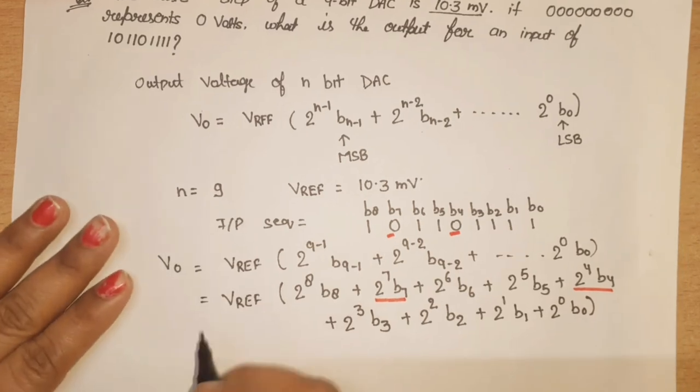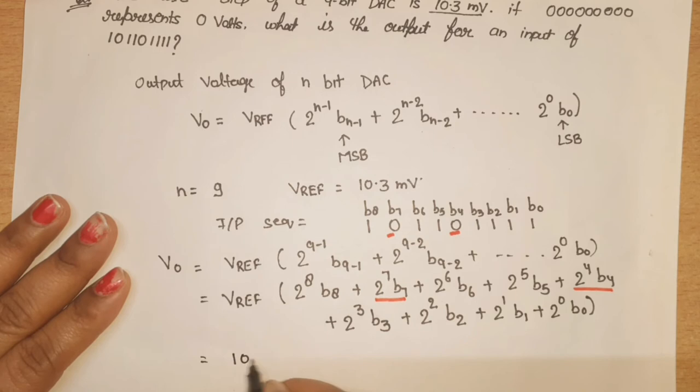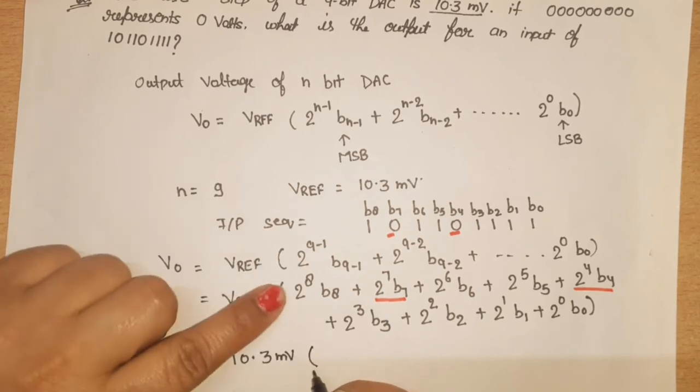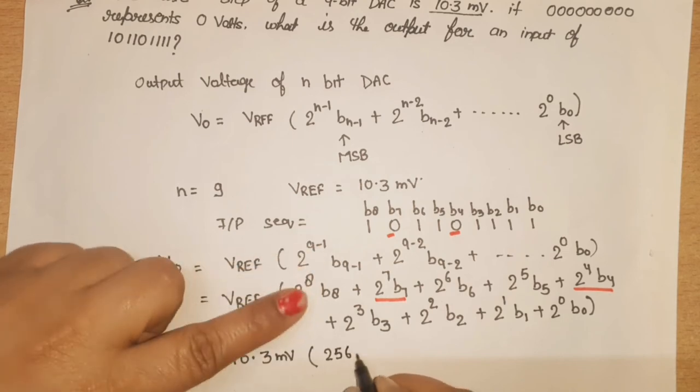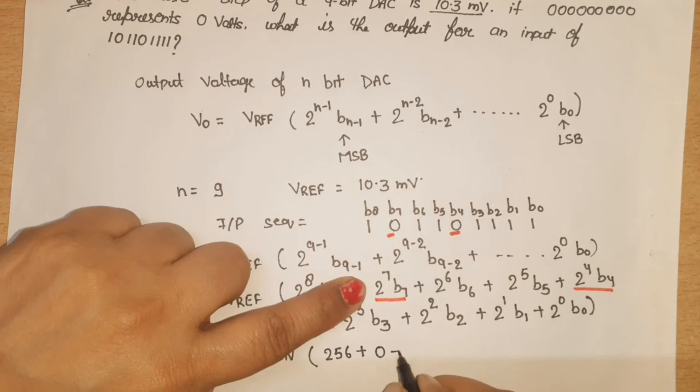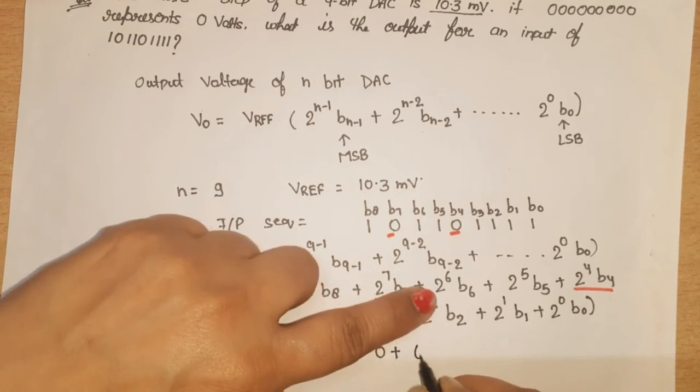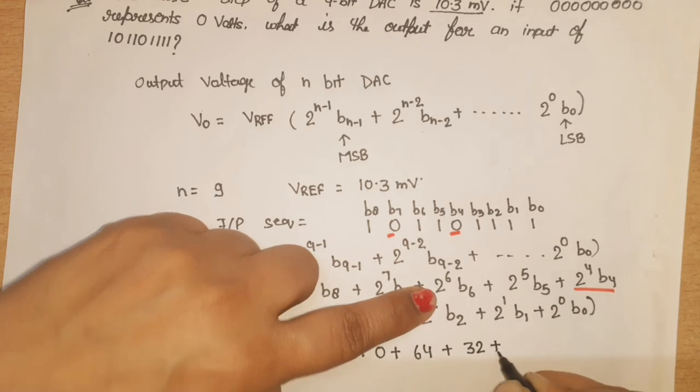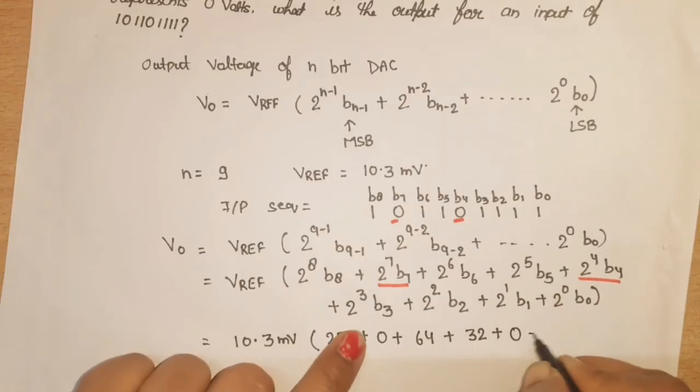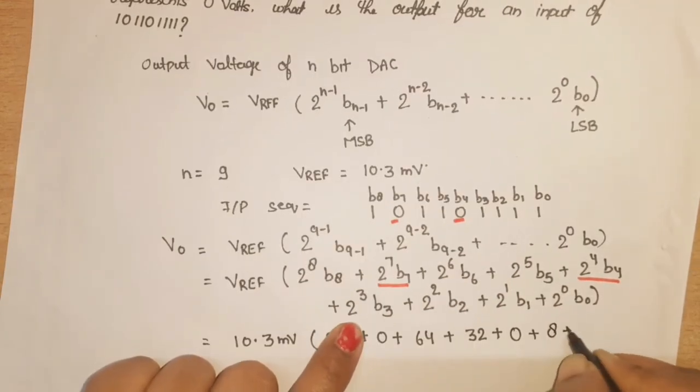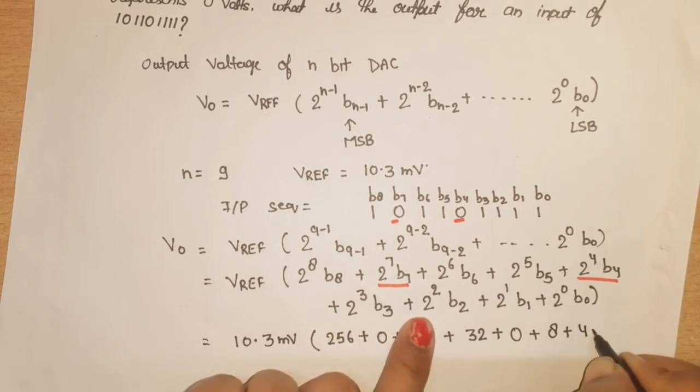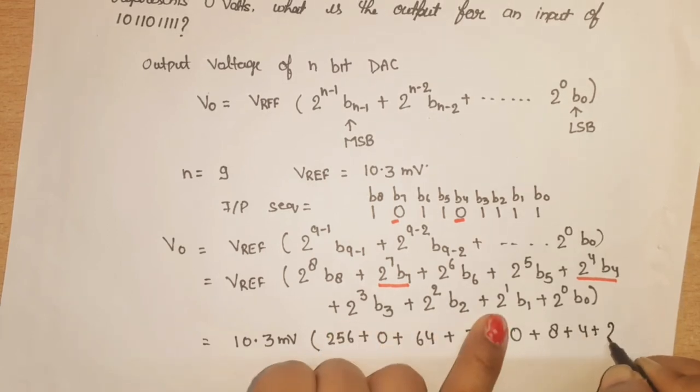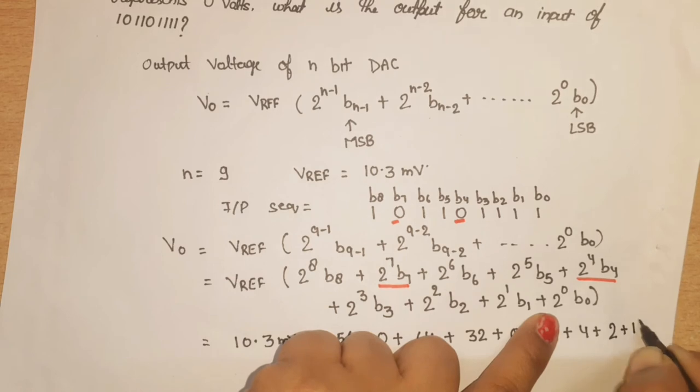Remaining b values are 1. So it will be V reference value 10.3 millivolt, under bracket: 2 raise to power 8 is equal to 256, b8 is 1, plus 7's value will be 0, means 0 plus, 2 raise to power 6 is 64 plus, 2 raise to power 5 is 32 plus, this will be 0 plus, here what will be: 8, 2 square means 4, 2 raise to power 1 means 2 plus, here what will be: plus 1.